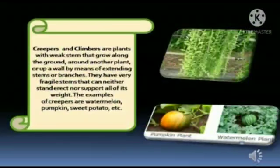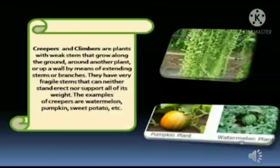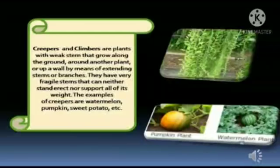We will now come to know about the rest of the kinds — that is creepers and climbers. Creepers and climbers are plants with weak stems that grow along the ground, around another plant, or up a wall by means of extending stems or branches. Extending stems are stems which have grown longer in length. They have very fragile, or very weak, stems that can neither stand straight nor support all of their weight. Examples of creepers are watermelon, pumpkin, sweet potato, etc.